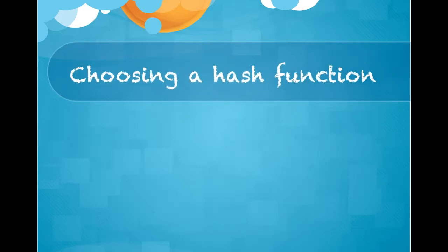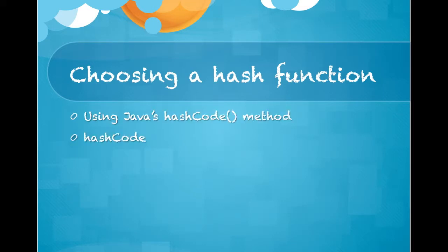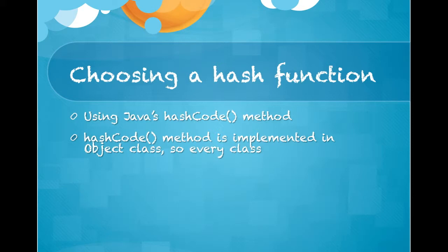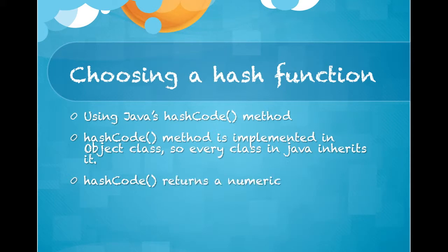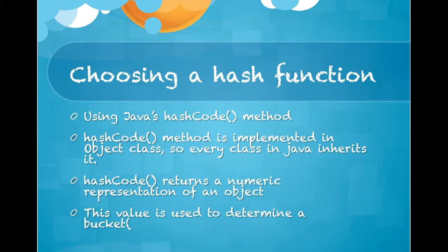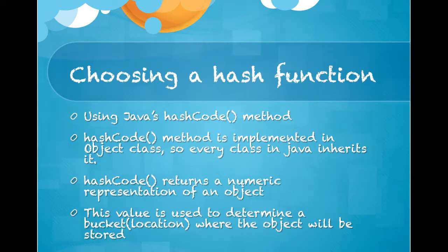How to choose a hash function? By using Java's hashCode method. The hashCode method is implemented in the Object class, so every class in Java inherits it. This hashCode method returns a numeric representation of the object, and this value is used to determine the bucket location where the object will be stored.